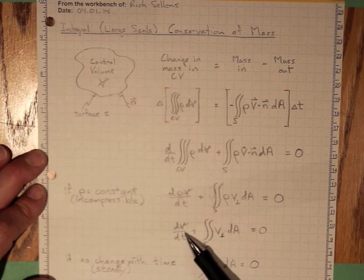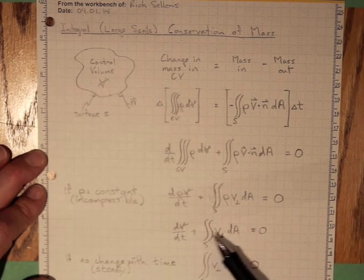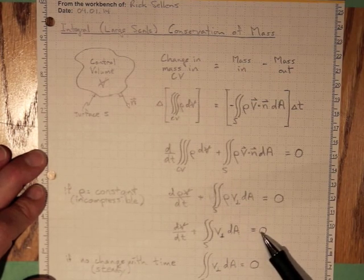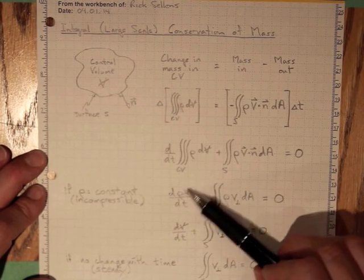So the rate of change of volume with time plus the integral over the surface of V perpendicular dA must be equal to zero, dividing through by rho.